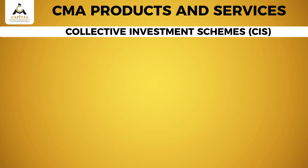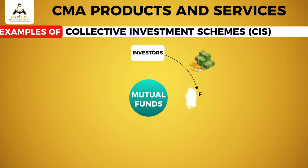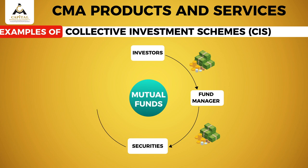One example of a collective investment scheme is the mutual fund. Here, investors entrust their money to a fund manager. The fund manager then invests the money in securities, and in turn the investors get returns from the gains made from the investments.